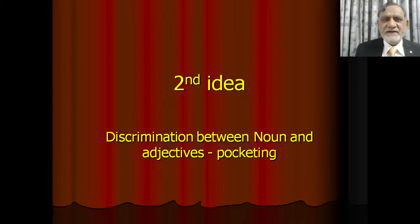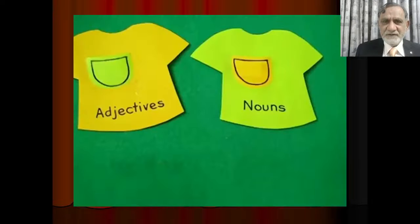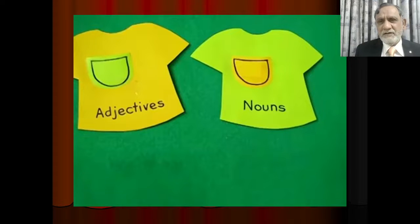The second idea for making an AV aid is about discrimination between nouns and adjectives being taught in junior classes. The idea of this AV aid is pocketing. No fine arts skill is required — any person who has scissors and can draw a little bit can make it.